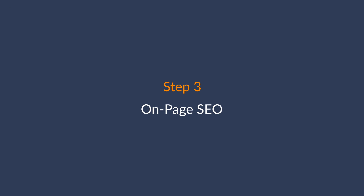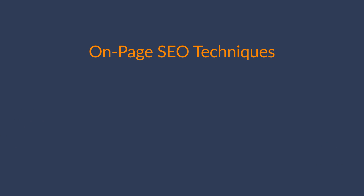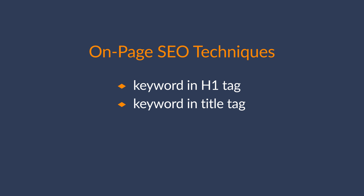You should have a solid list of keyword ideas now, so it's time to move on to some on-page SEO. If you're familiar with SEO, you'll find that a lot of typical on-page best practices apply here — for example, including your keyword in your H1 tag, adding your target keyword in the title tag, setting the URL slug to your keyword, and using short URLs. But there are a few other things you should specifically do for local SEO.